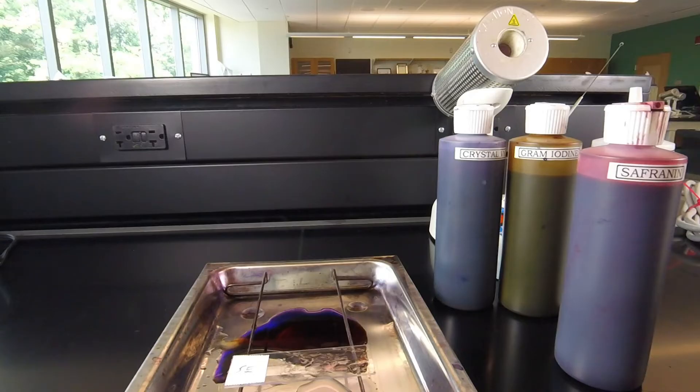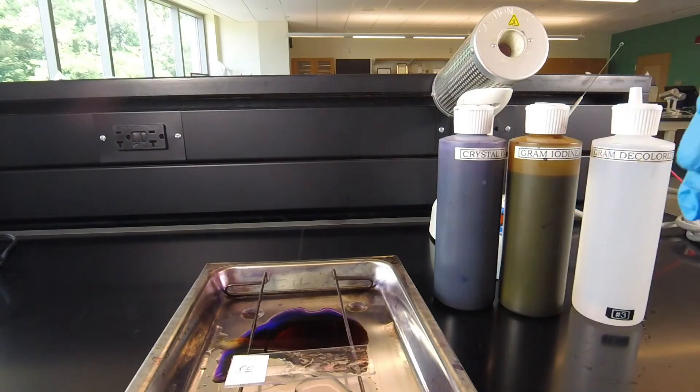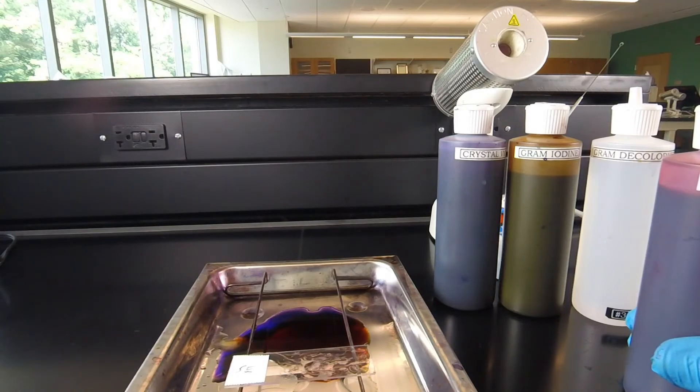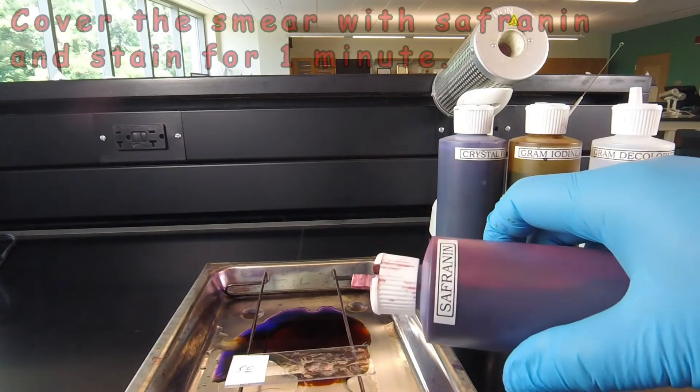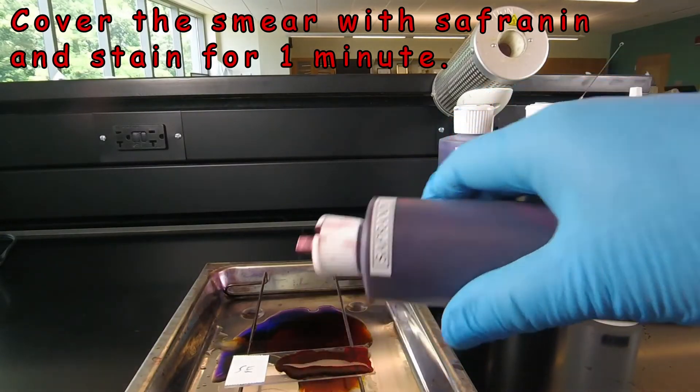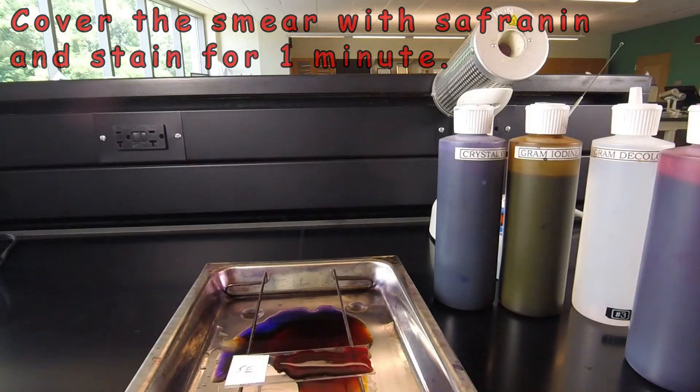In the final step of the Gram stain, we're going to add the counter stain Safranin. It's a basic dye like crystal violet, but it's pink rather than purple. We add enough Safranin to cover most of the smear, and we're going to let that sit for one minute.